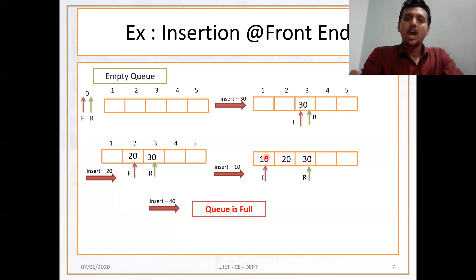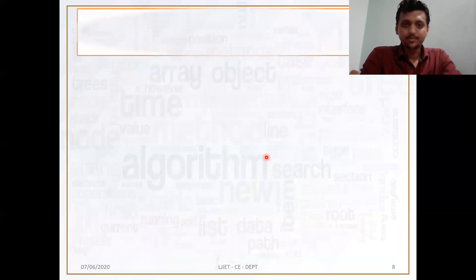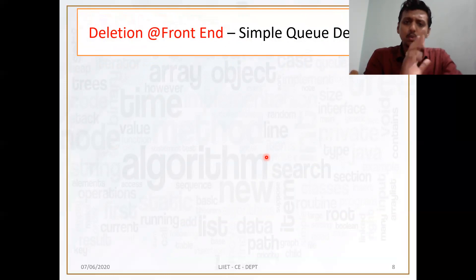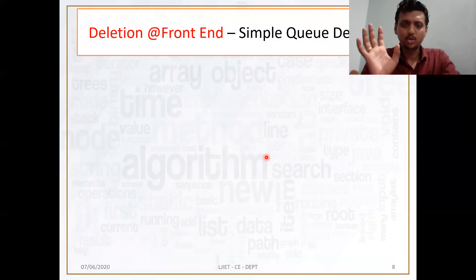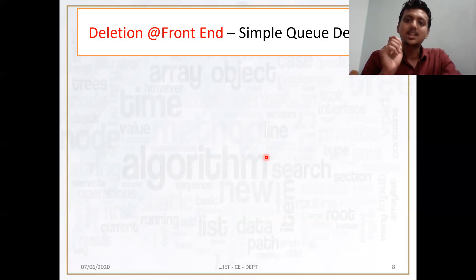So let's begin our today's topic: deletion in DQ. Deletion at front end — usually in simple queue, deletion occurs at the front end, because the front end is only for the deletion purpose. That's why it is the same as simple queue deletion algorithm.